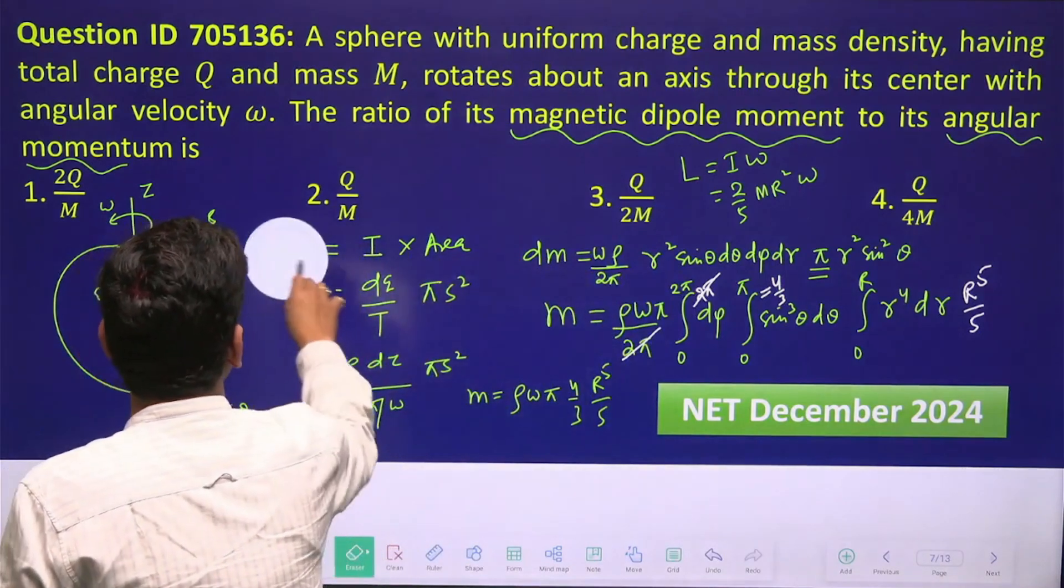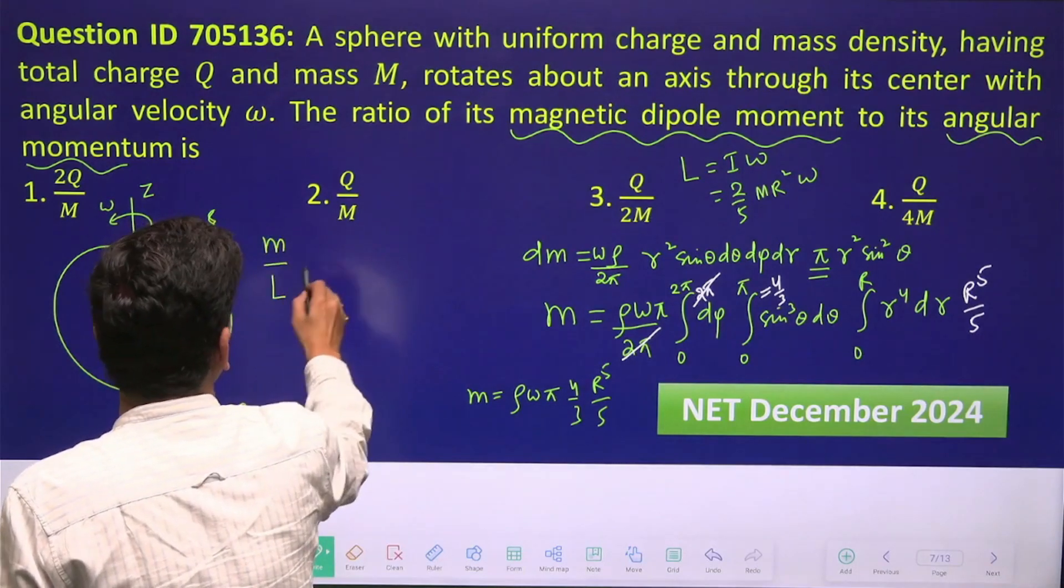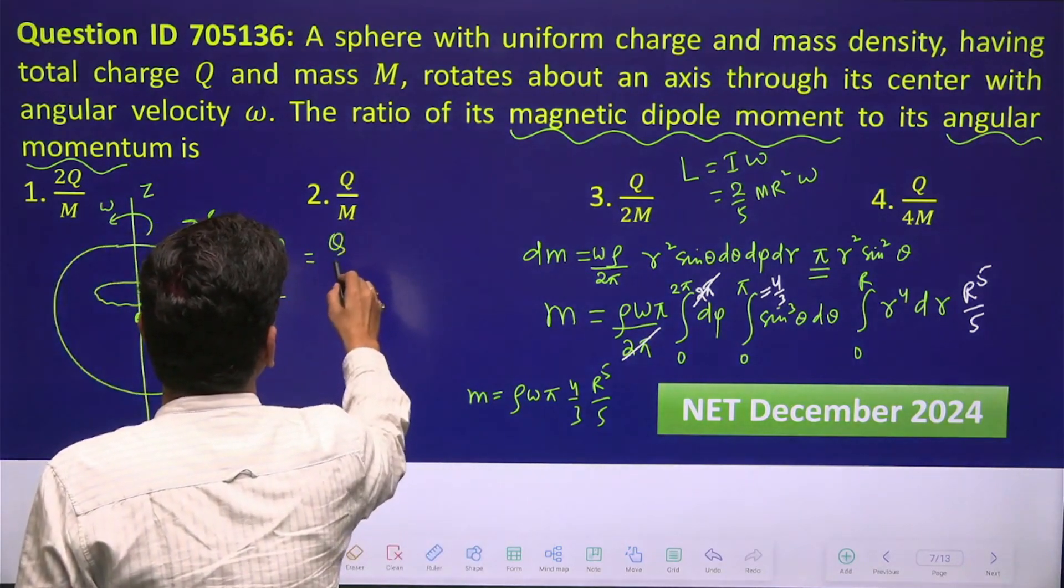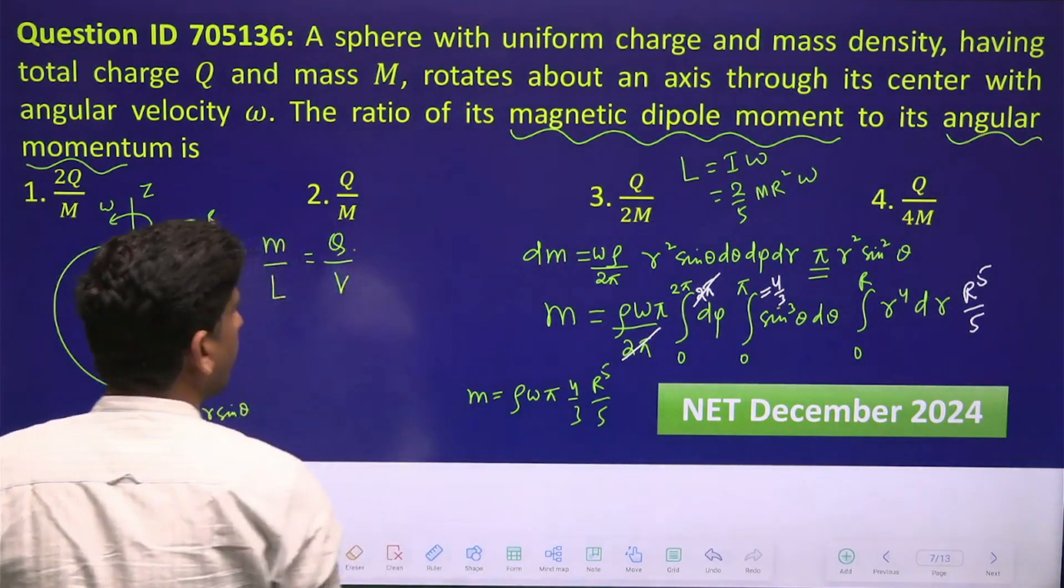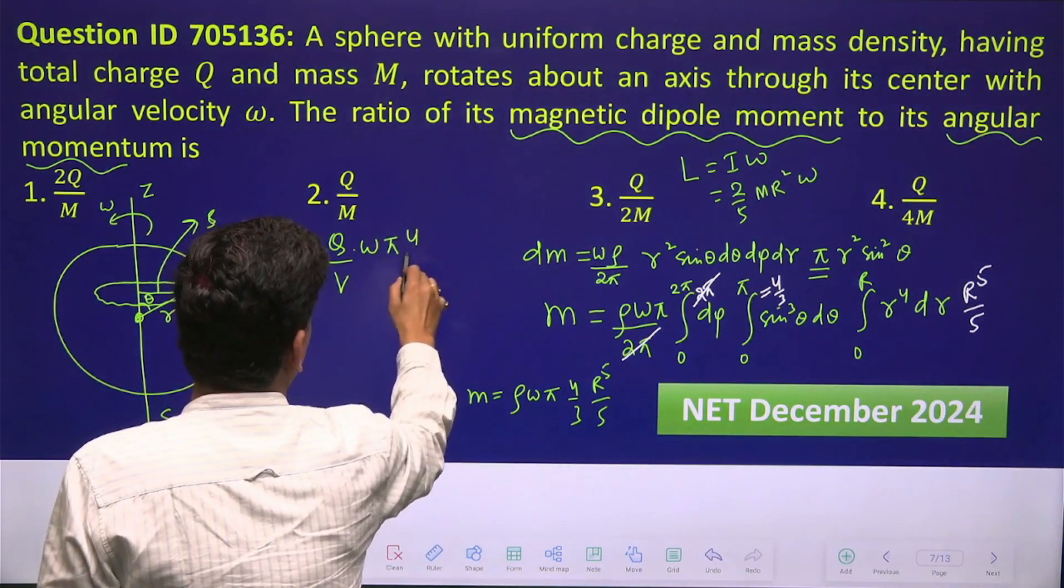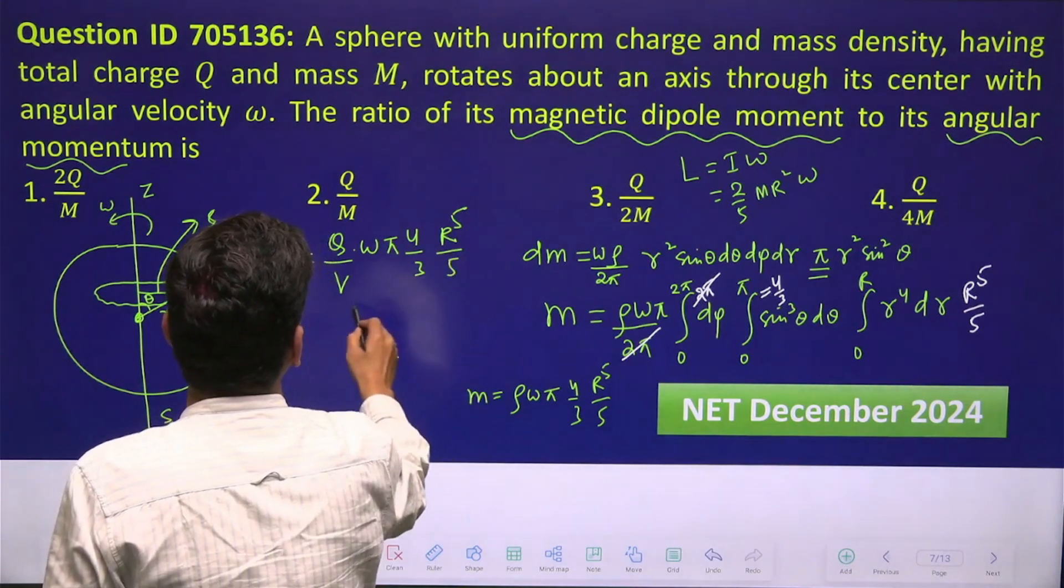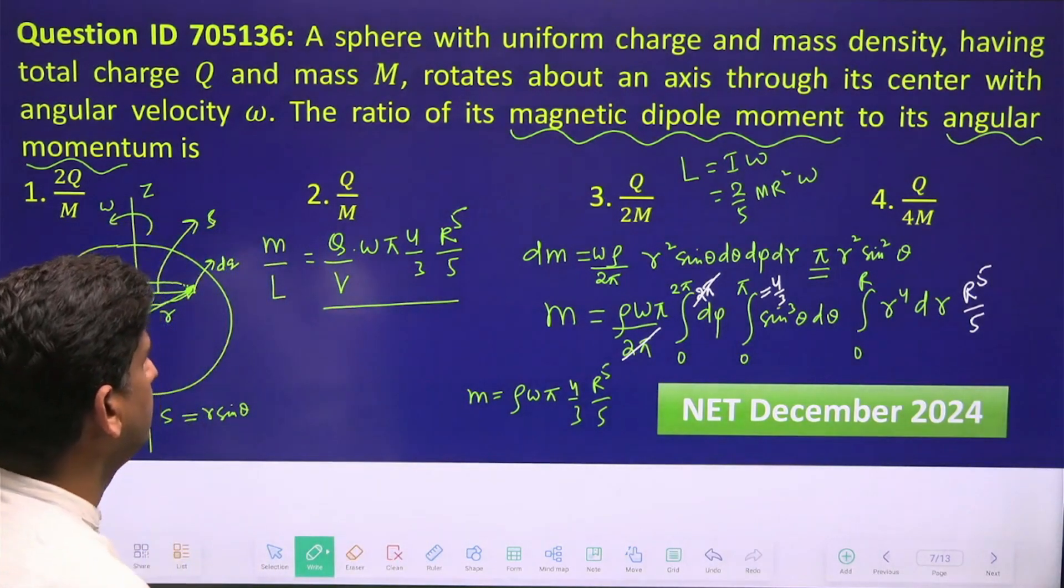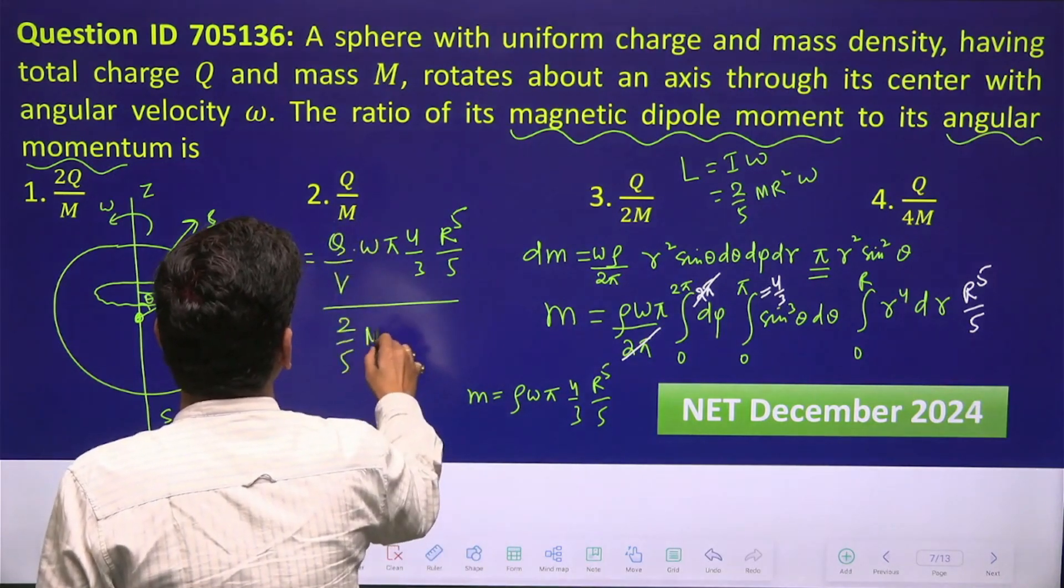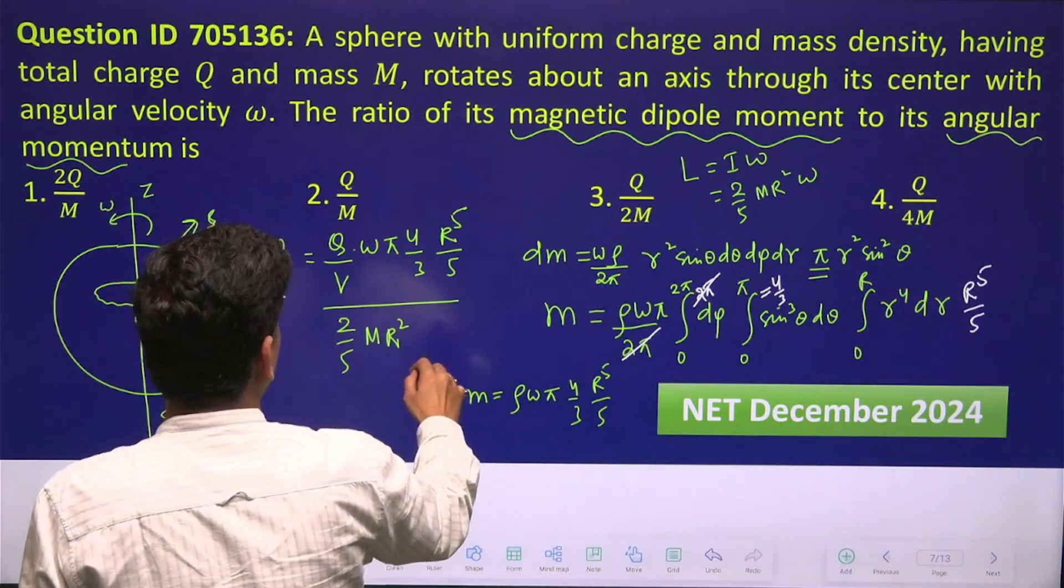Finally we have to find out the value of this ratio, that is m/L. So that will be equal to ρ, which is charge density - charge per unit volume - into ω π × 4/3 × r⁵/5, upon 2/5 × mass m r² × ω.